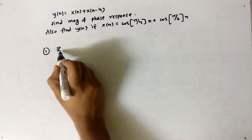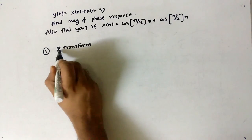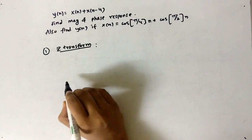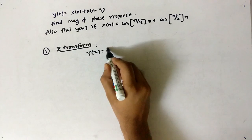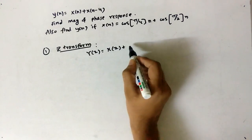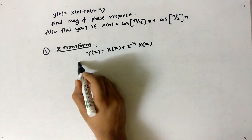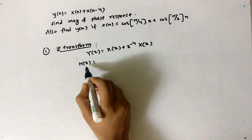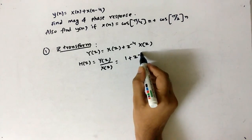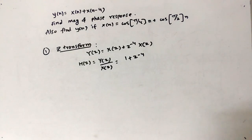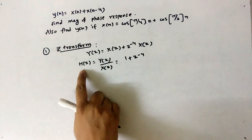First, we have to use the Z-transform to convert this difference equation into a transfer function. Applying the Z-transform gives Y(z) = X(z) + z^(-4)·X(z). So H(z) = Y(z)/X(z) = 1 + z^(-4). The first step is simply to use the Z-transform and find the transfer function H(z).